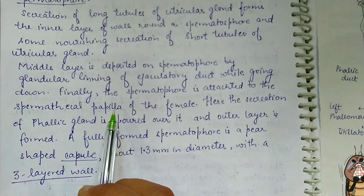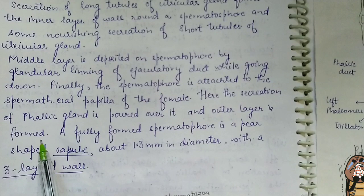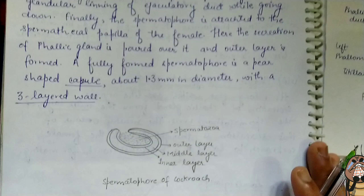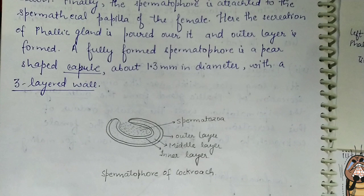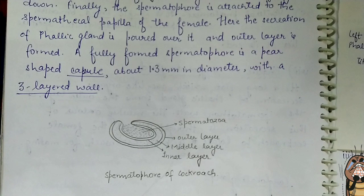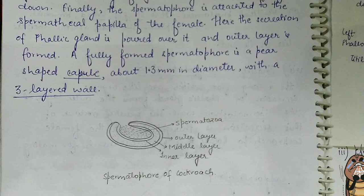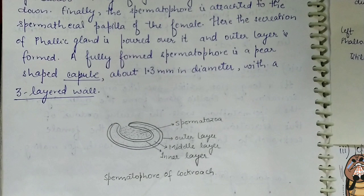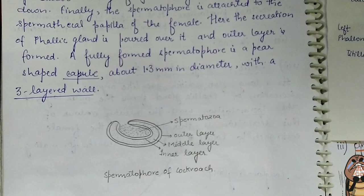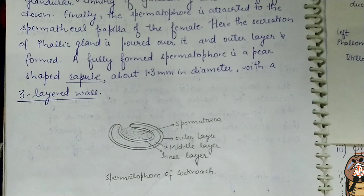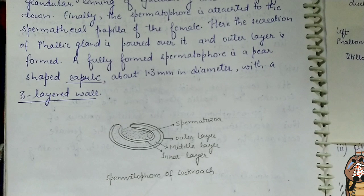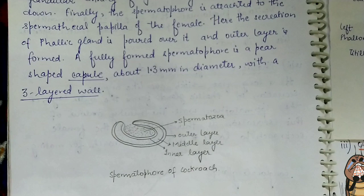To summarize, the spermatophore has three layers: the inner layer formed by the long tubules of the utricular gland, the middle layer formed by the glandular lining of the ejaculatory duct, and the outer layer formed by the phallic gland once the spermatophore is attached. This completes the male reproductive system and its physiology.